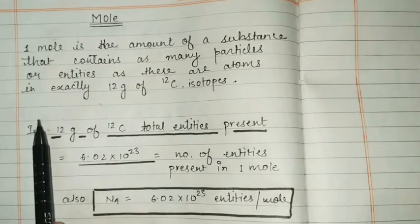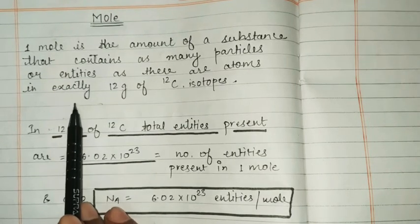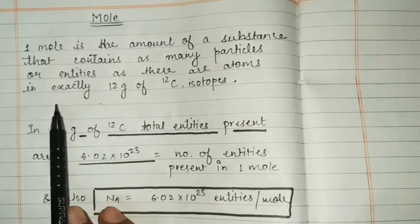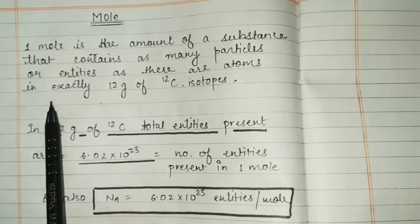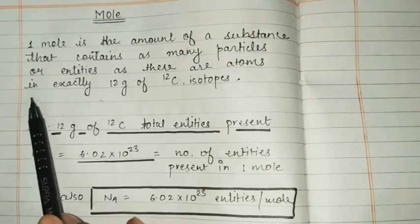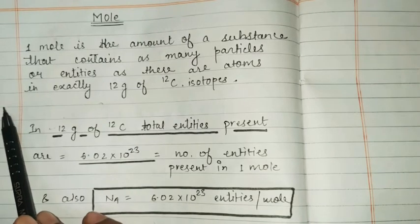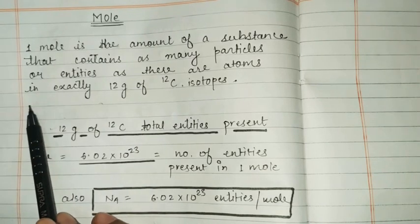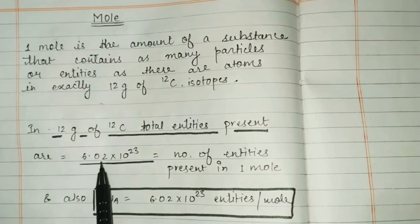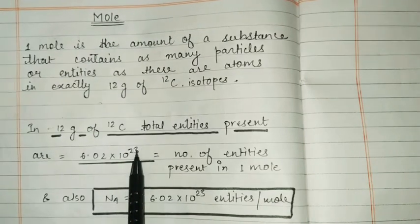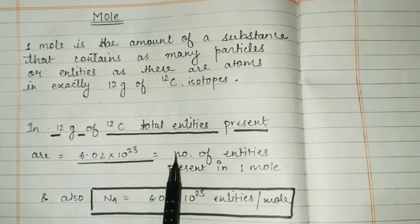Like a dozen - if you say something is one dozen, it means it indicates total 12 entities. Same as it is, if someone says that the given compound is one mole, means that particular compound contains 6.02 into 10 to the power 23 molecules of that compound.